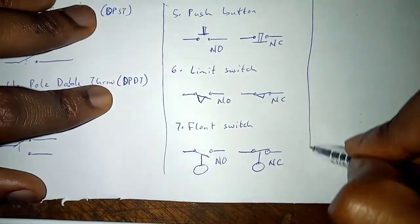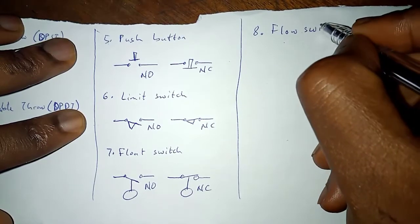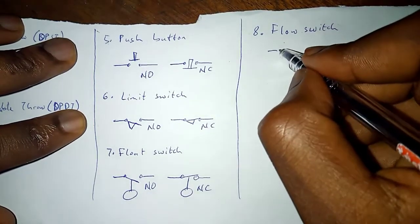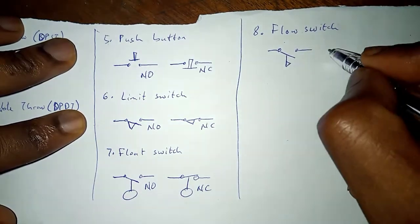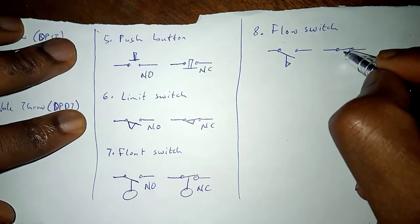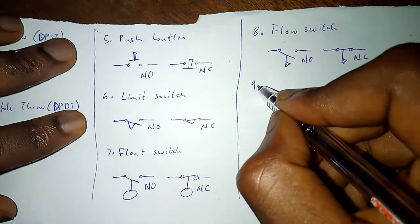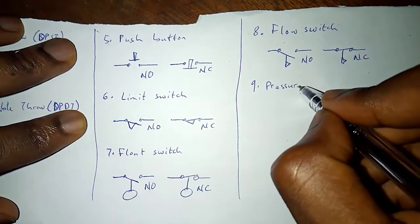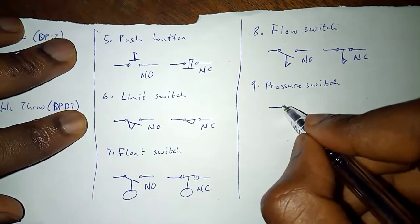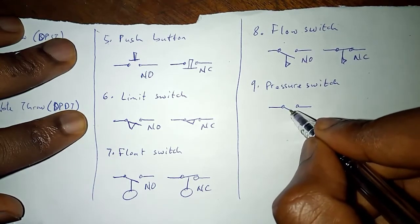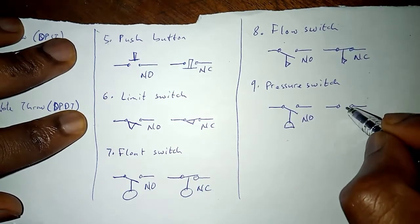And there is also the flow switch that detects flow of fluids. For instance, if at a point you want to check whether fluids are flowing or not, you can use the flow switch. This is the normally closed variation and this is the normally open variation. Then we have the pressure switch that detects increase in pressure. An amount of pressure is needed to close the switch or open the switch. This is the normally open and this is the normally closed.